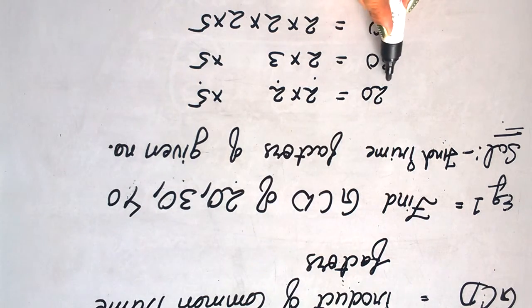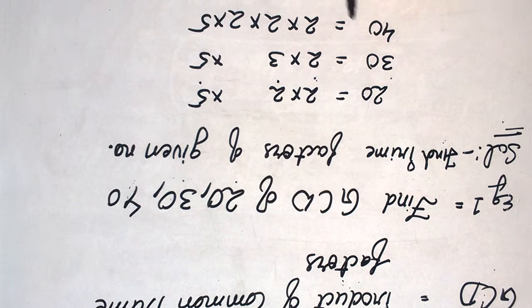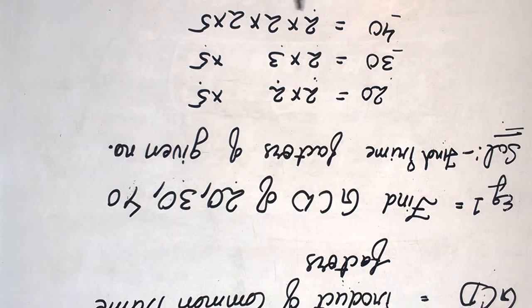The prime factors for 20 are 2 × 2 × 5. Prime factors for 30, 2 × 3 × 5, and for 40, it's 2 × 2 × 2 × 5.